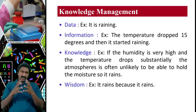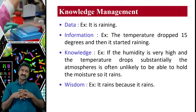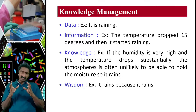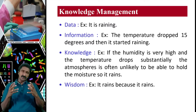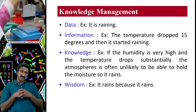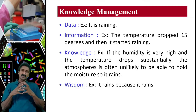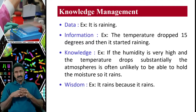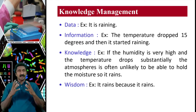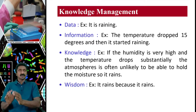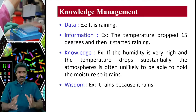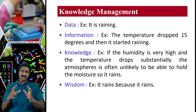Another example: 'The temperature dropped 15 degrees and then it started raining' — here there is a cause-and-effect relationship. Processed data that gives usefulness is information. Knowledge is a higher order: if humidity is very high and temperature drops substantially, the atmosphere cannot hold moisture and it rains. This explains why it rains and what the prerequisites are — generating that idea is a level of knowledge.